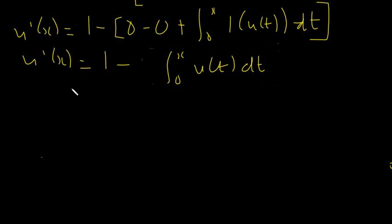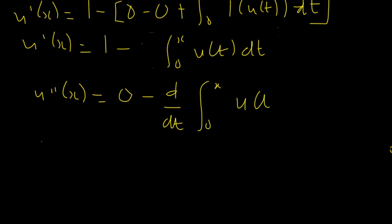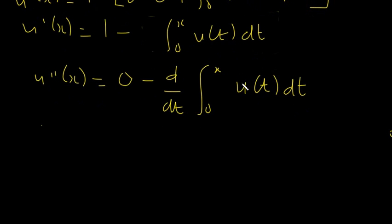We further differentiate to get u''(x), which equals zero minus d/dx of the integral from zero to x of u(t) dt. Notice the difference: here we only have a function of t, not a function of both x and t, so there is no need to apply the Leibniz rule — just do normal differentiation.